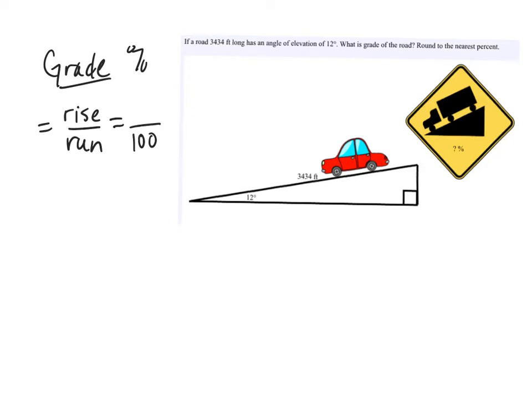Think about what you do when you find the percent on an assignment: you find the rise — like the number you got — over the run — the total possible — and you divide them and make it a percent, a number over a hundred.